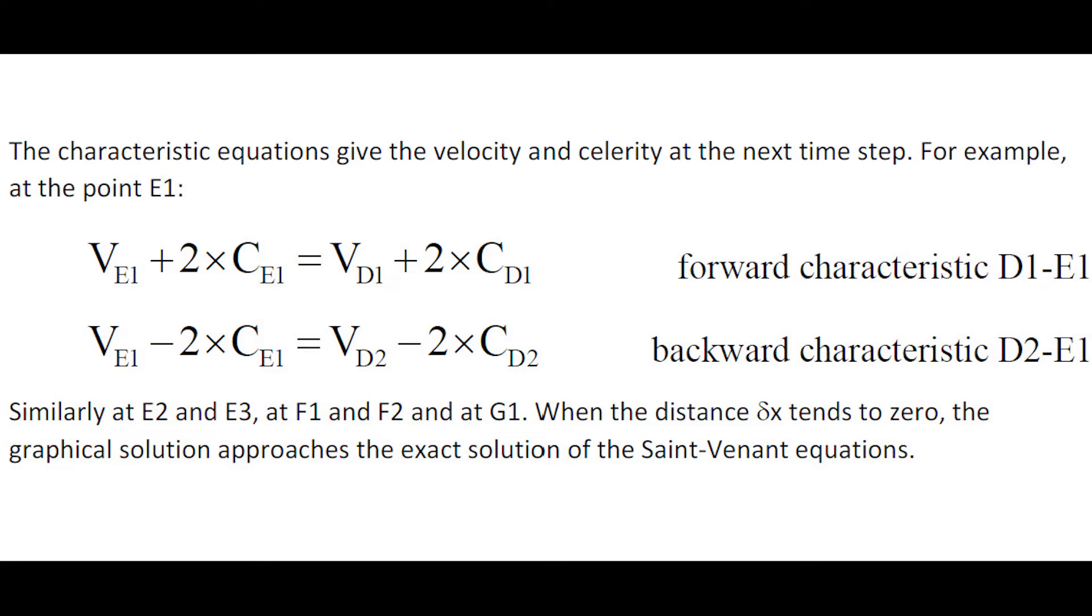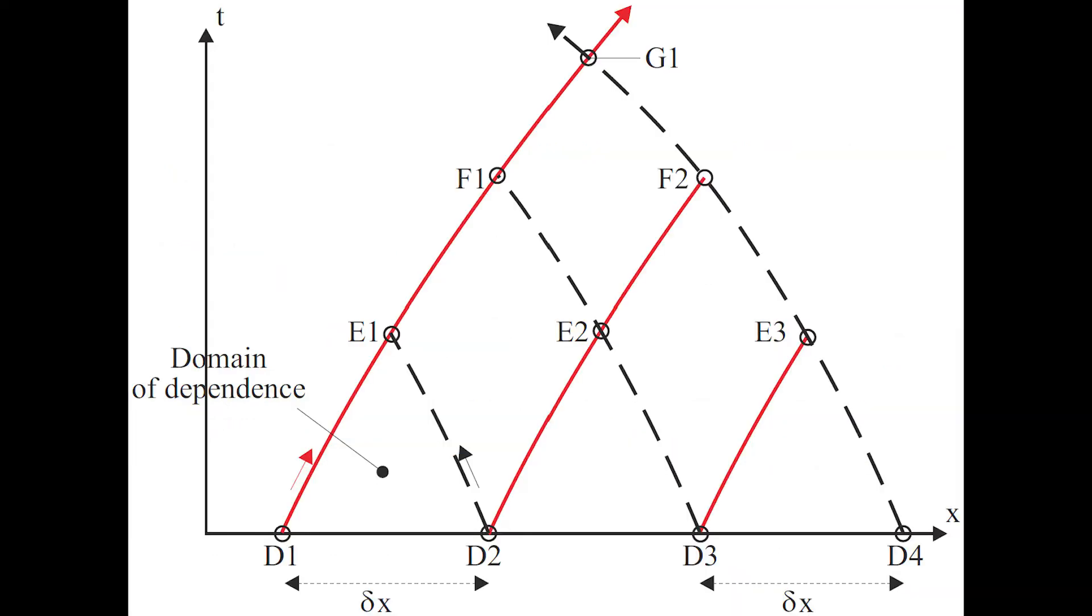The characteristic equations give the velocity and celerity of the next step. Since when Sf equals S0, v plus 2c is a constant along the forward characteristic, and v minus 2c equals a constant along the backward characteristic, this can be extended to the next time step.